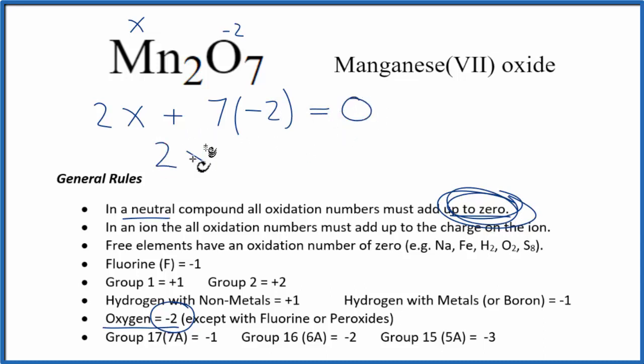So 2X minus 14 equals zero. 2X equals 14. And then X, that'll equal 7, plus 7.